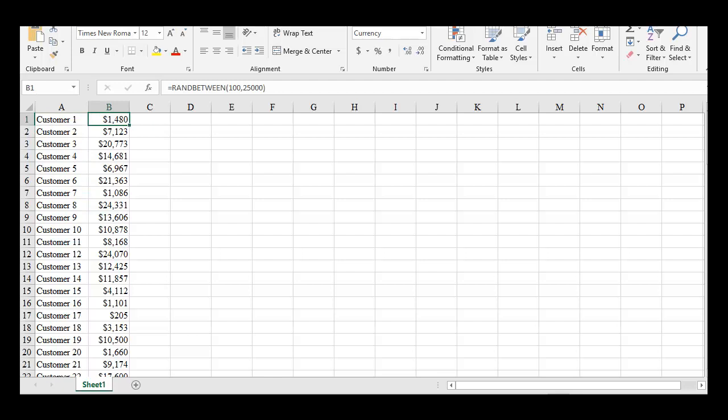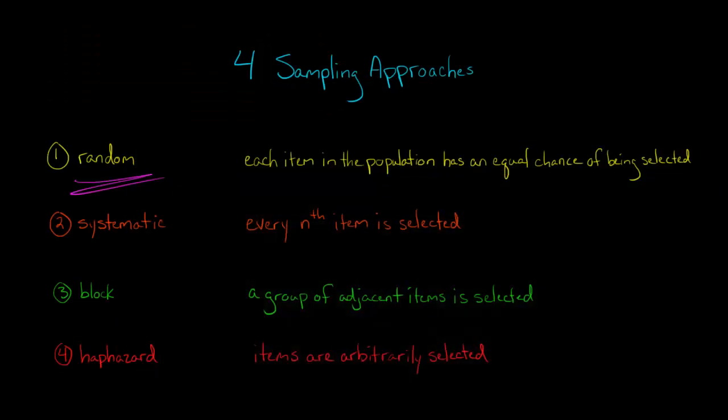We've got 100 customers, and this is their accounts receivable balance. So I just randomly generated some numbers here. So this customer owes $1,480, customer 2 owes $7,123, et cetera. I did this in Microsoft Excel, and we could set it up so that Excel randomly selects, let's say out of these 100 customers, we wanted it to select a sample size of 10.